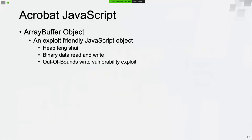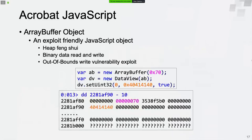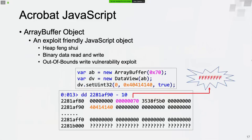The last object we discuss is the ArrayBuffer object in JavaScript — this is an exploit-friendly object. It can be used for heap manipulation and supports reading and writing binary data. Here we define an ArrayBuffer object; the backing store will be allocated on system heap if the size is greater than 0x68. If we can override the backing store byte length to 0x8F, we can turn it into an arbitrary address read/write primitive and achieve code execution.